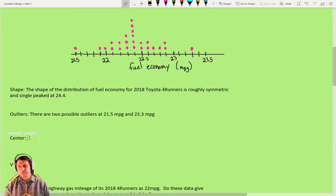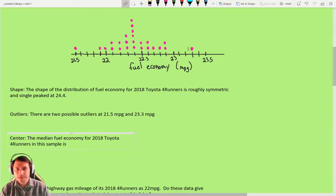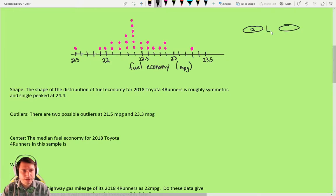Next, center. Where is the middle? There's two options here. You can either do the average, the mean, or the median. I'm going to do the median in this case. The median fuel economy for 2018 Toyota 4Runners in this sample is—I believe in the problem, they said there were 25 pieces of data. So I have to count. The median of course is the middle piece. So there's going to be 12 pieces of data here. I want this one and 12 pieces of data here. So I want the 13th piece of data will be the middle. So 1, 2, 3, 4, 5, 6, 7, 8, 9, 10, 11, 12, 13. And that is 22.4. It does happen to be in the peak. It does not always—the peak is 24.4 miles per gallon.